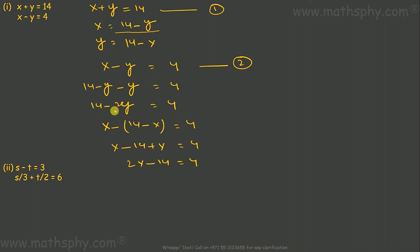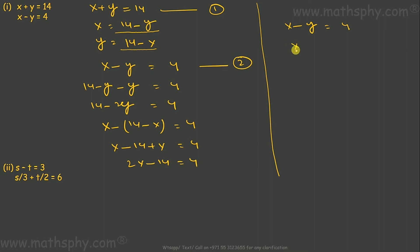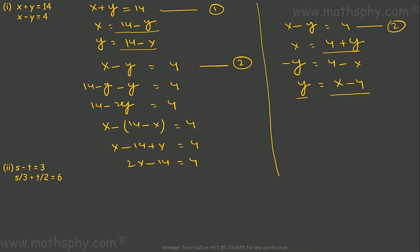The benefit is that from two variables I now have only one variable, which I can solve very easily. In place of replacing X, I can replace Y with Y equals 14 minus X — again from two variables I have only one variable, which can easily be solved. Here I have taken the first equation to find the values of X and Y and plugged them into the second equation. I can do the same thing with the second equation and plug them into the first equation. The second equation is X minus Y equals 4, so X would be 4 plus Y.